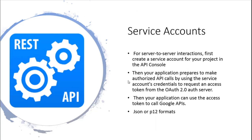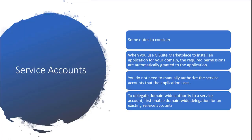If you use a G Suite marketplace to install an application for your domain, permissions should be granted automatically and you should not need to manually authorize service accounts for that application. You can also delegate domain-wide authority to a service account, though that grants authority across the whole company. Users are authenticated with emails and passwords, while service accounts are authenticated with a key file. Your project needs a private key when requesting an OAuth access token. Google does not keep a copy of this private key — when you download it, you must save the P12 file and don't lose it.